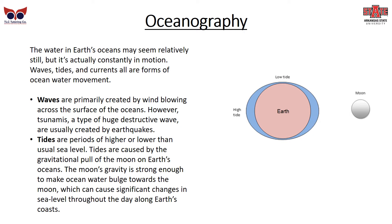The water in Earth's oceans may seem relatively still, but it's actually constantly in motion. Waves, tides, and currents are all forms of ocean water movement. Waves are primarily created by the wind blowing across the surface of the oceans. However, tsunamis — a type of huge, destructive wave — are actually caused by earthquakes. Tides are periods of higher or lower than usual sea level, caused by the gravitational pull of the Moon on Earth's oceans. The Moon's gravity is strong enough to make ocean water bulge toward the Moon, which can cause significant changes in sea level throughout the day along the Earth's coast.